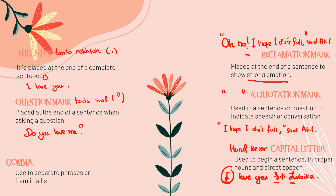Lastly, comma. It is used to separate phrases or items in a list. For example: 'I love to eat durian, mango, and apple.' You don't need to put a comma before 'and' here or a comma after 'and' because we have a sentence connector. So that is comma.